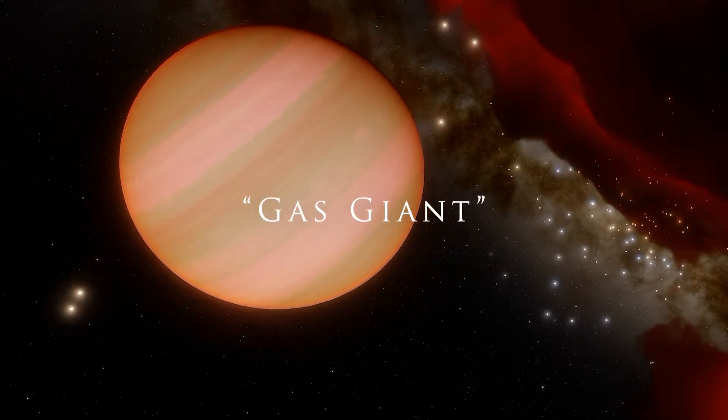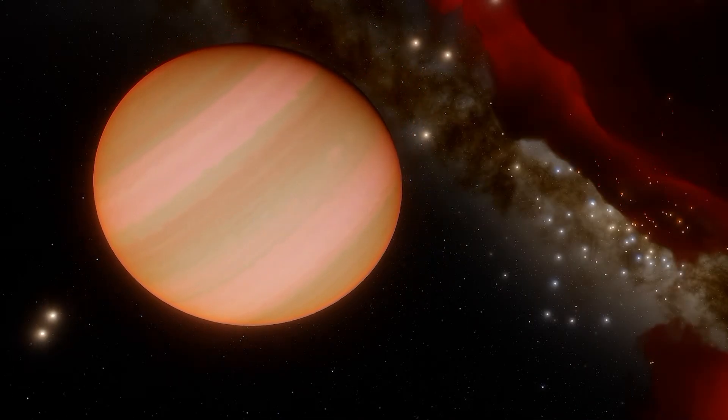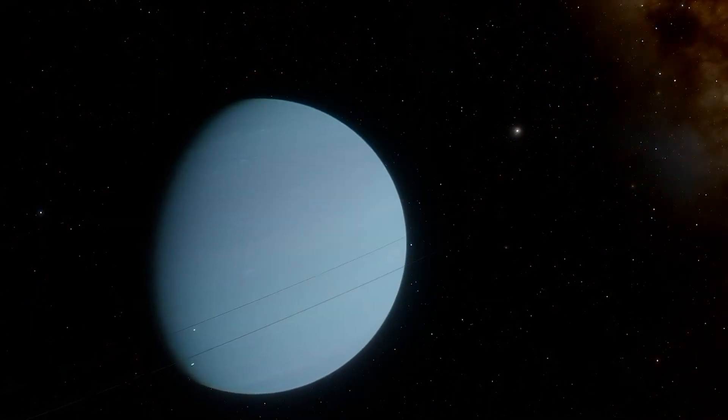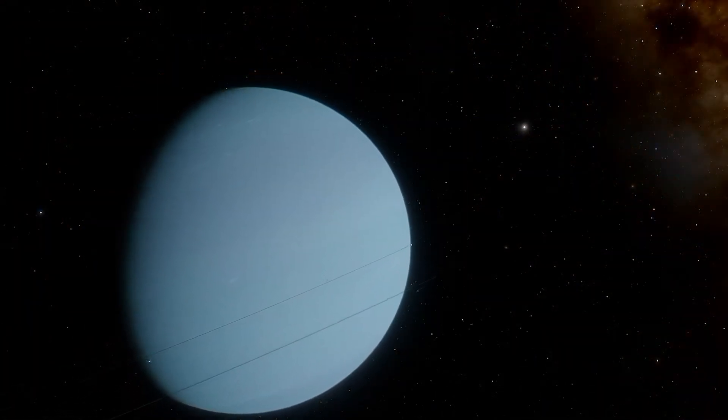The term gas giant was first introduced in 1952 by science fiction writer James Blish and for a while it was used to refer to all giant planets in the solar system.